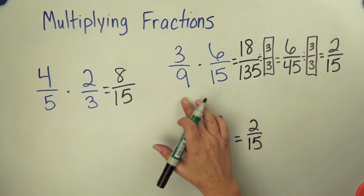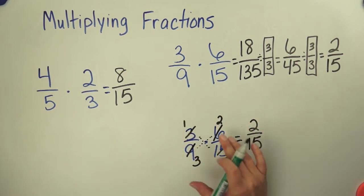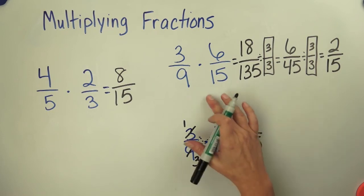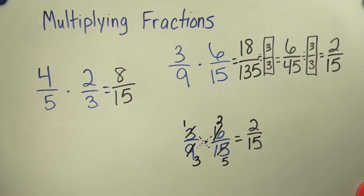And I also get 2 fifteenths if I multiply and then simplify. So in this case I have simplified basically before I multiplied and this time I simplified after I multiplied. Either way you get the same answer. And that's the end of our lesson on multiplying fractions.